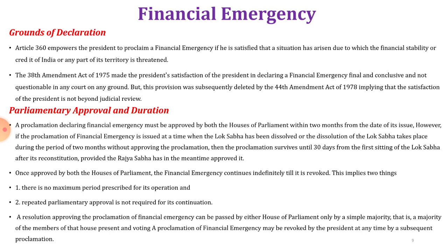Once approved by both houses of parliament, the financial emergency continues indefinitely until it is revoked. This implies two things: there is no maximum period prescribed for its operation, and repeated parliamentary approval is not required for its continuation. A resolution approving the proclamation of financial emergency can be passed by either house of parliament only by a simple majority — that is, a majority of the members of that house present and voting.